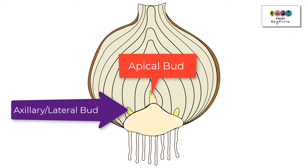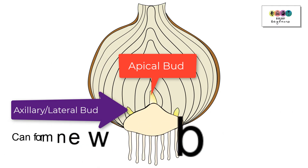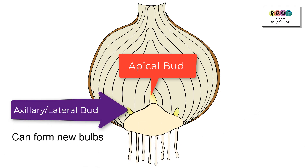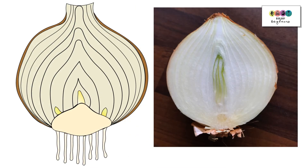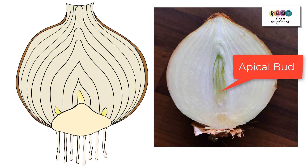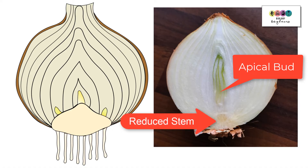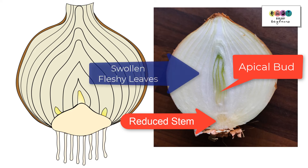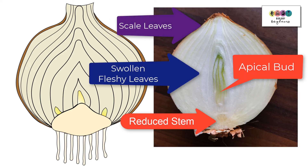At the center you have an apical bud, which gives rise to a new flower. You also have axillary or lateral buds, which can eventually give rise to new bulbs. When you look at an actual sliced onion you can pick out the key labels: the apical bud at the green center, the reduced stem, the swollen fleshy leaves where all the food is, the scale leaves on the outside, and the roots.